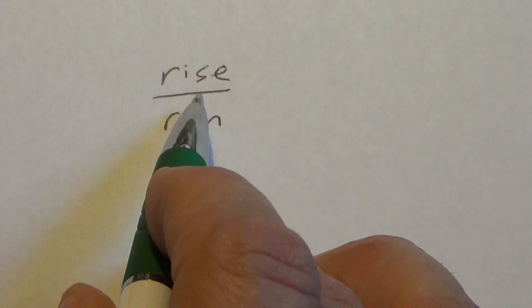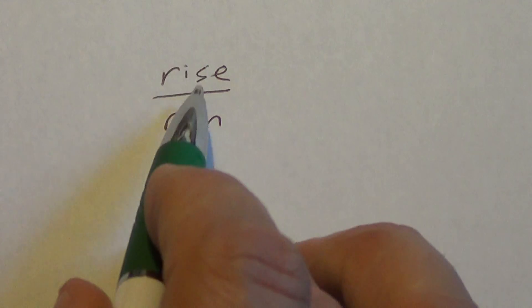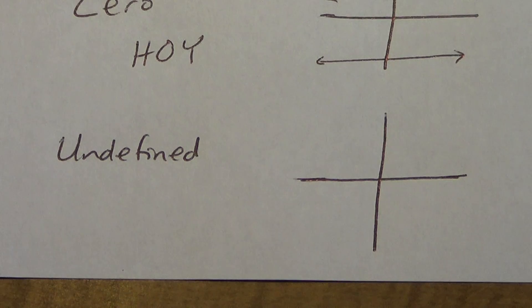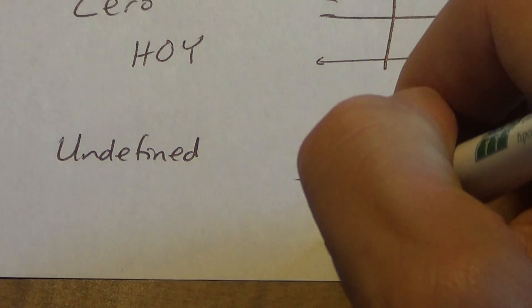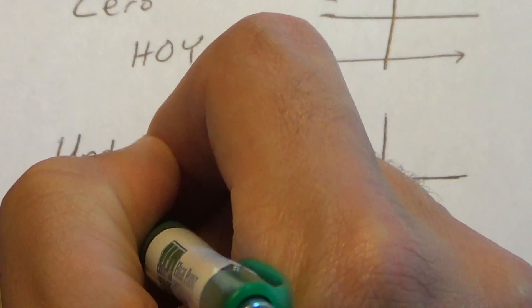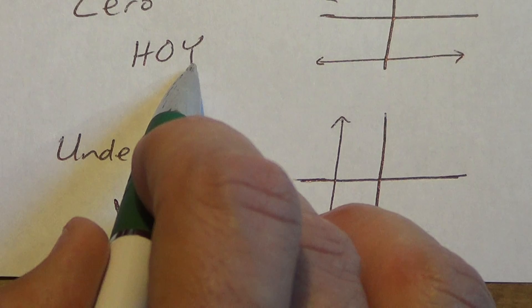The last type is undefined slope. To get undefined, you have a number divided by zero — like five divided by zero — which we cannot do in math. If zero is in the denominator, the run is zero, meaning there's no left-right movement at all, only up-and-down movement. Those lines are vertical lines.